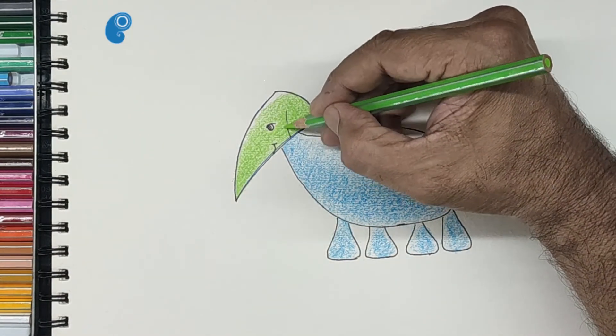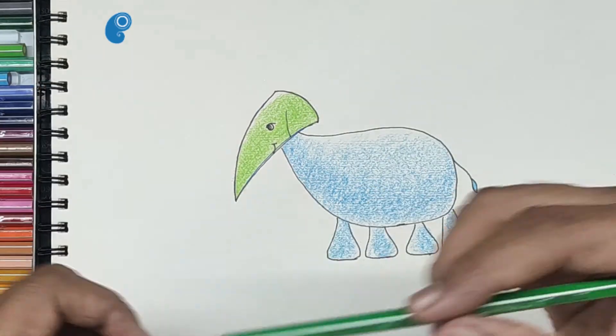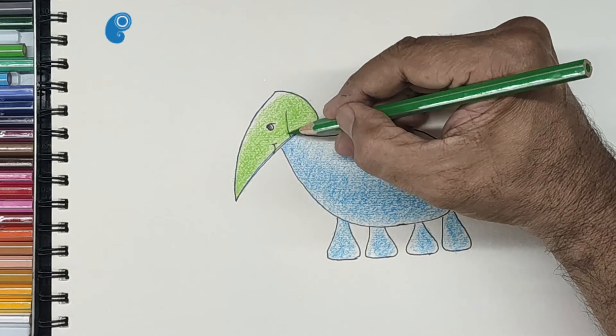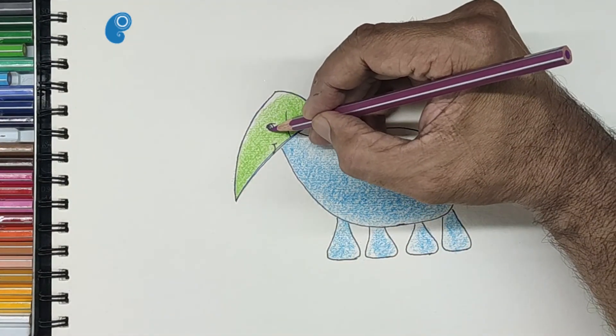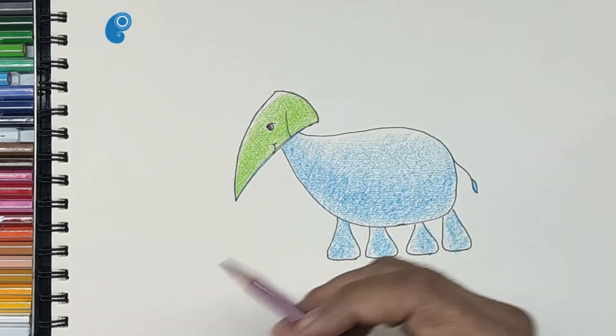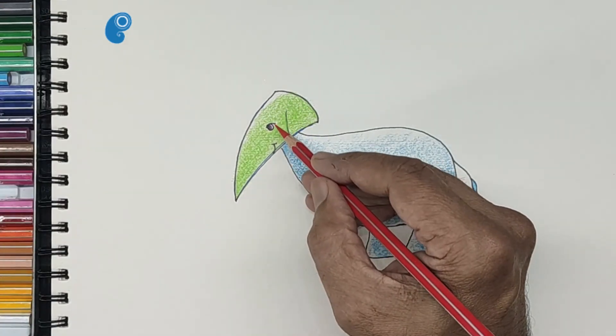We will smoothen the head color with light green once again. We are using dark green to do the shaded parts. We are coloring the eye purple. A dab of red on the eye's corners.